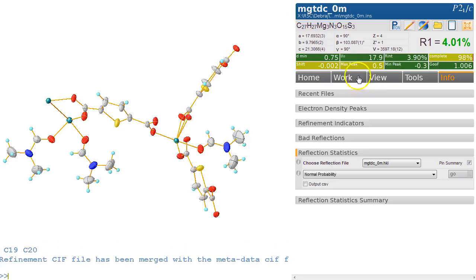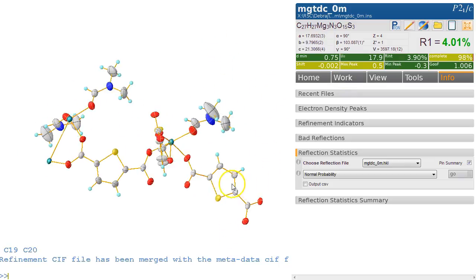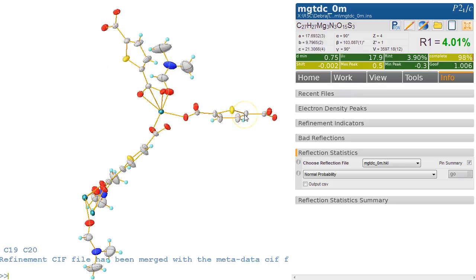It hasn't settled now again because we omitted the reflections. Control-R will deal with that, and hopefully this is settled now. Okay, I hope this was helpful. It's quite a nice little structure. Thank you for listening and thank you for using Olex2.